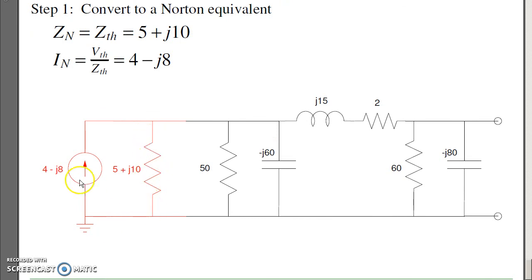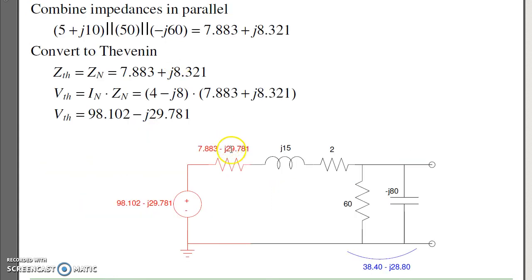The resistance stays the same. The voltage becomes V over R, 4 minus j8. I can now put these in parallel, combine them, and convert back to voltage. In parallel, the impedance is 7.8 plus j8 ohms.